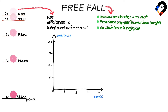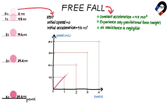For the speed-time graph of free fall, the speed of the ball increases by 9.8 meters per second every second. We plot the following points: at one second speed is 9.8, at two seconds speed is 19.6, at three seconds speed is 29.4, and at four seconds speed is 39.2. Drawing a straight line from the origin, the constant gradient indicates constant acceleration of 9.8 meters per second squared.